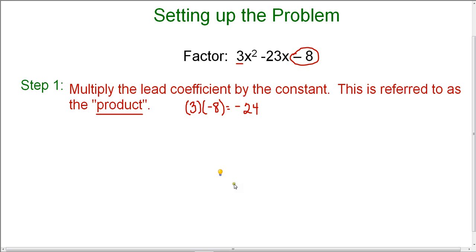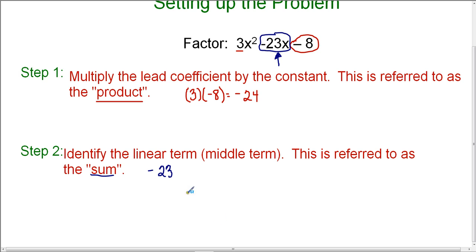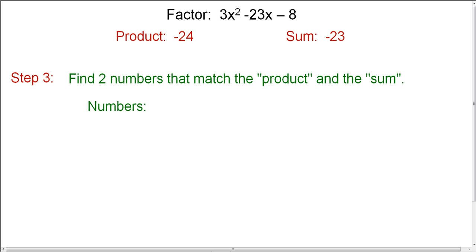Step two is to identify the linear term, or the middle term — we're going to refer to this number as the sum. A linear term has a variable to the first degree. Here the linear term is negative 23x, so the sum we're looking for is negative 23. Now we're looking for two magic numbers that have a product of negative 24 and a sum of negative 23.